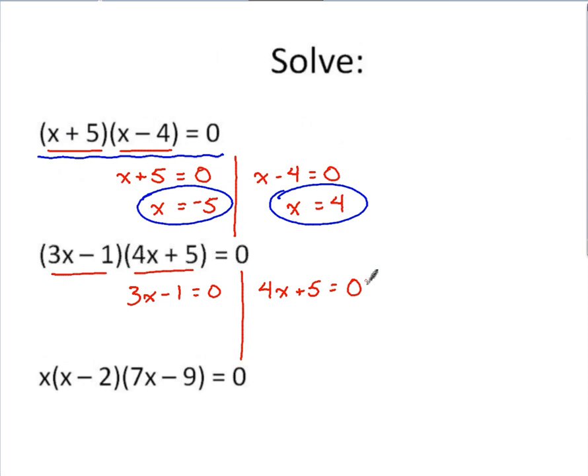For this first equation where 3x minus 1 equals zero, I add 1 over, 3x would equal 1, I divide both sides by 3, x would be 1 third. For this second equation I subtract 5 over, so 4x would equal negative 5, divide both sides by 4, and x would be negative 5 fourths.